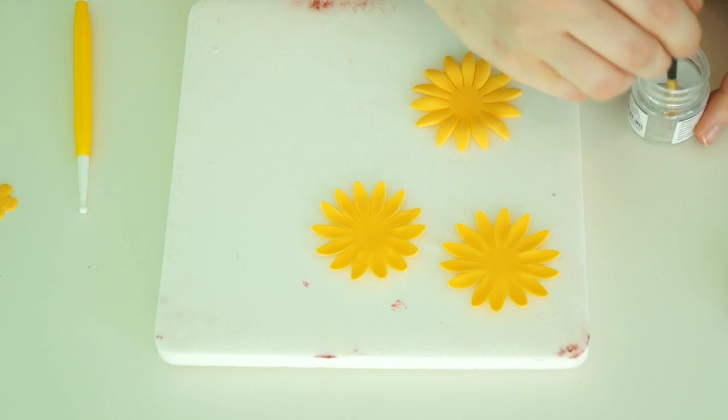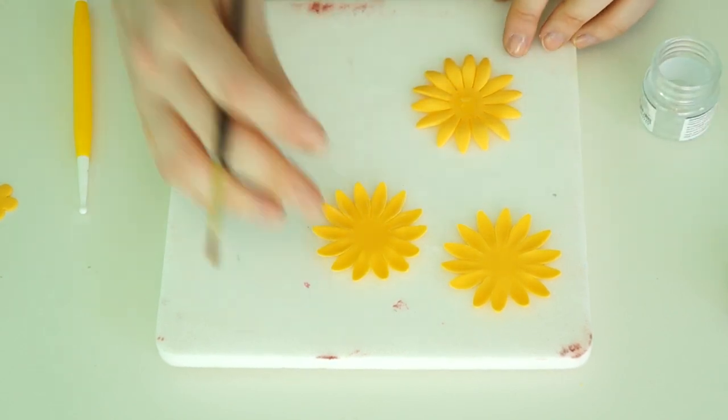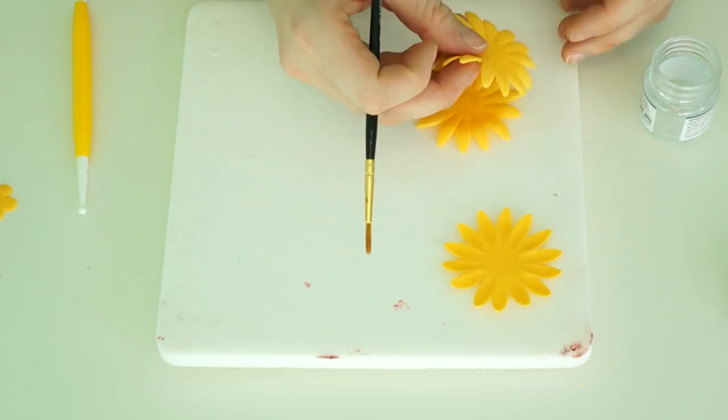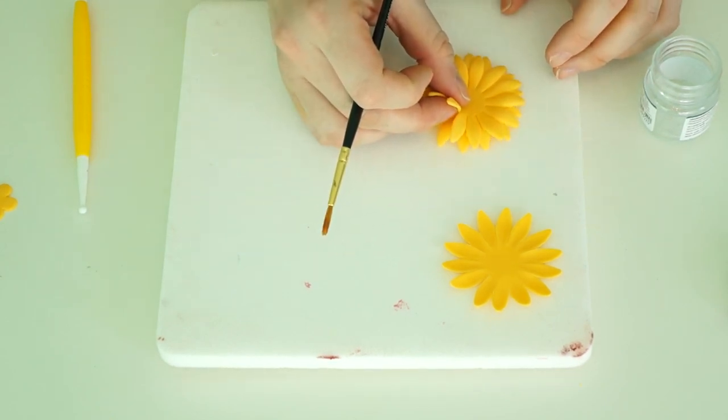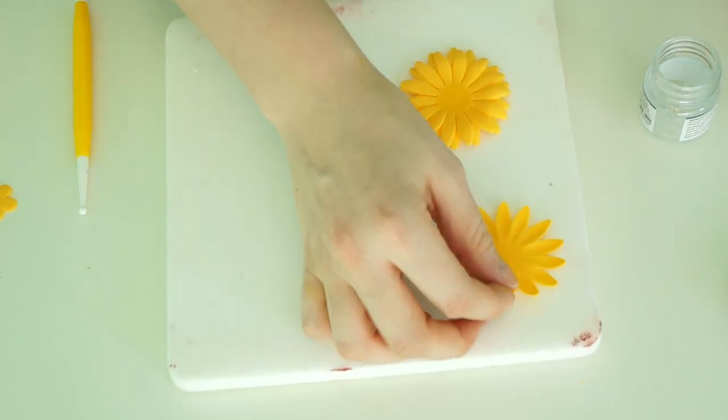Use some edible glue and just stick the three of those together. Now what you want to do is make sure that you just vary the petals slightly so they don't have to be kind of covering each other.